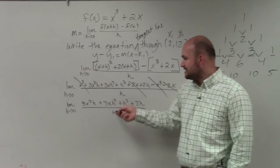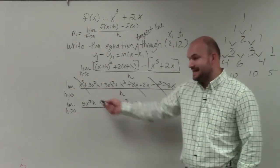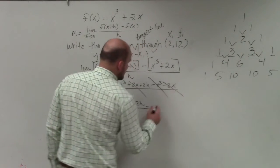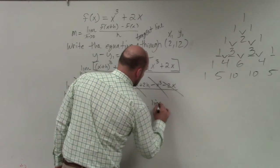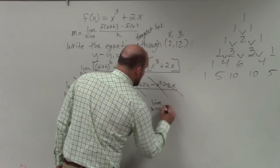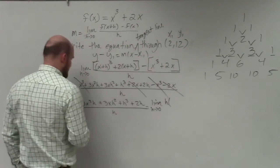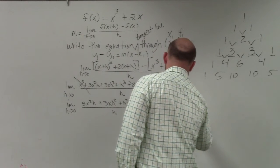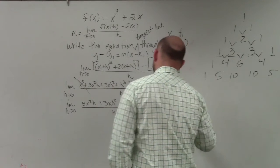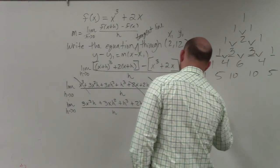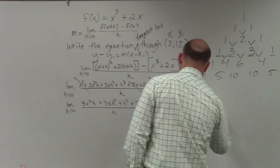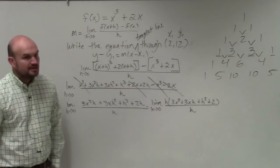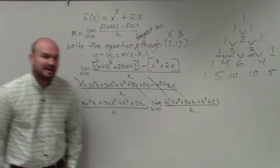So the easiest way to kind of show this would just be to rewrite the limit as h approaches 0 and factor out the h in the numerator. So therefore, by factoring out the h, I'm left with 3x squared plus 3x h plus h squared plus 2. So you guys see how I just factored out the h in the numerator?